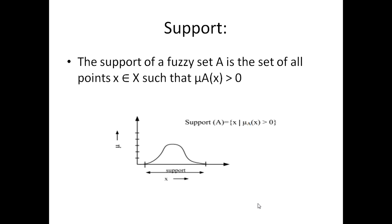The first one is support. What basically the support is and how we normally know what is support in a fuzzy set. As you can see in this diagram, say this is a set A — that set is having different membership values. In a fuzzy set, every set does have different membership values. So if the membership value of that specific set A, say membership A of X, is greater than zero, everywhere where it is greater than zero that will be called the support of that specific fuzzy set. So support of A is X where the membership value of X is greater than zero.